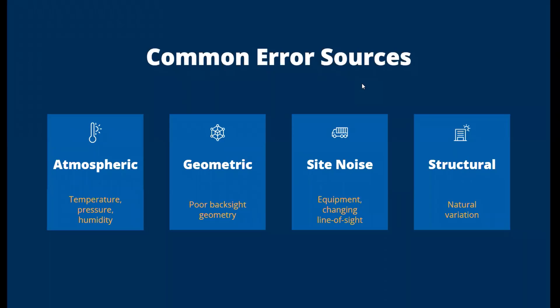Another source of error is geometric. If you have poor backside geometry or if all of a sudden you're missing backsides or one is moving, these are things you need to take into account. Site noise can really affect our measurements, whether it's blocked backsides, changing line of sight, equipment moving around the area, vibration, influence on the total station, all these different things.